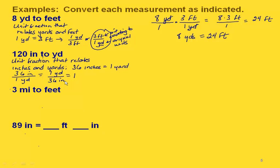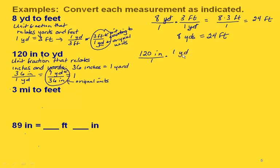Now we pick the right fraction for this situation. Since we're starting with inches, we want those on the bottom, and we're converting to yards, so yards go in the numerator. So we take 120 inches over 1, multiply by 1 yard over 36 inches. Our units cancel out — that's how we know we've picked the right unit fraction. We have 120 times 1 yard on top and 1 times 36 on the bottom.